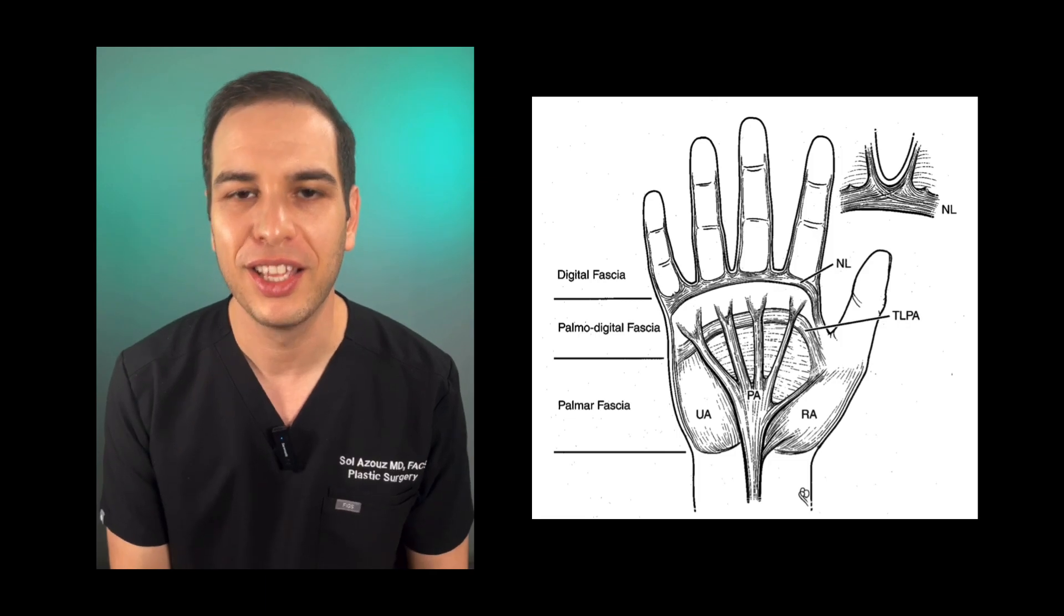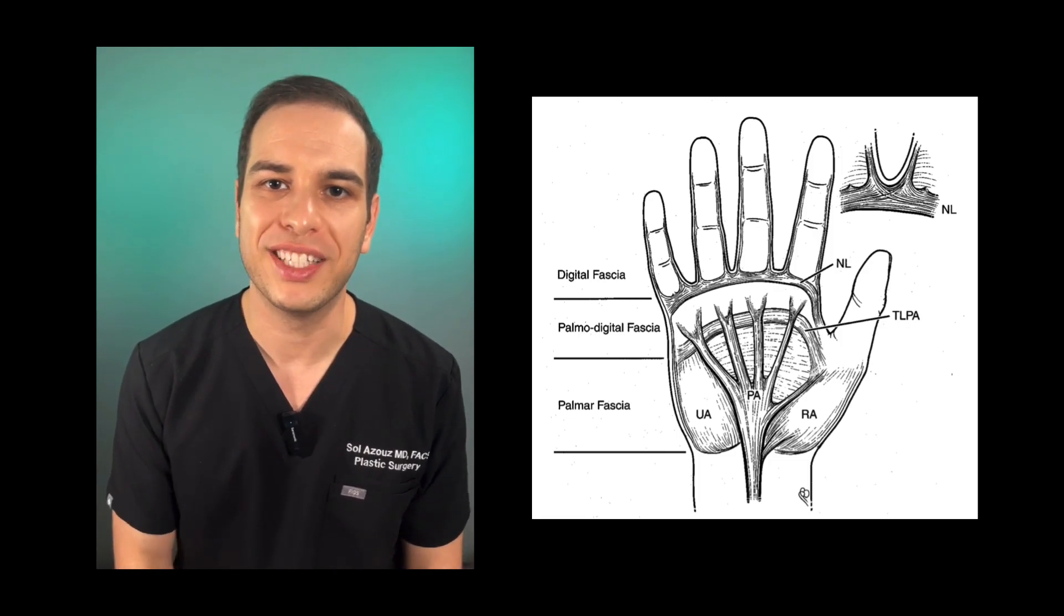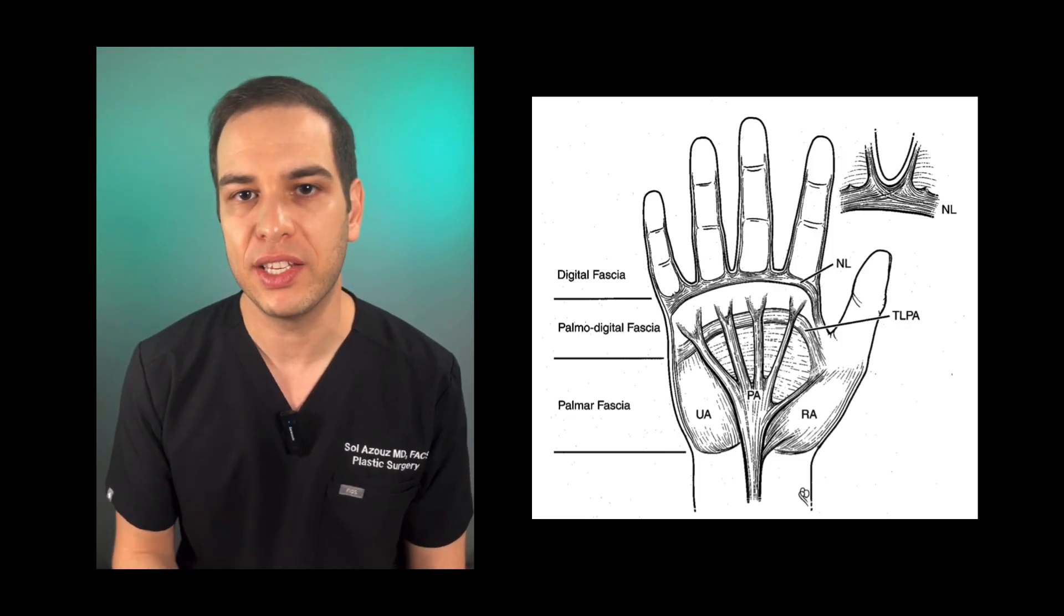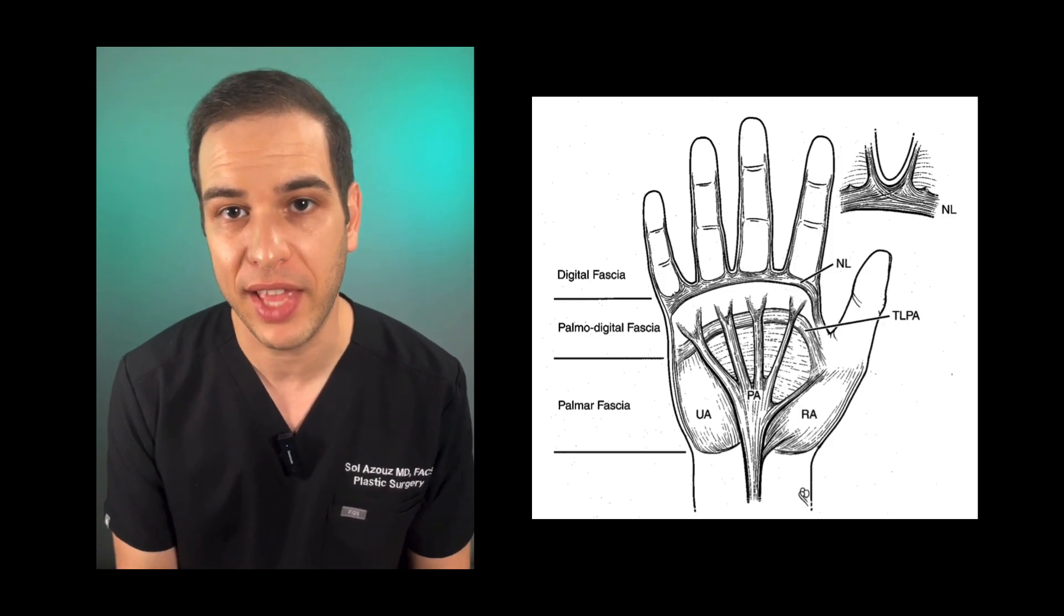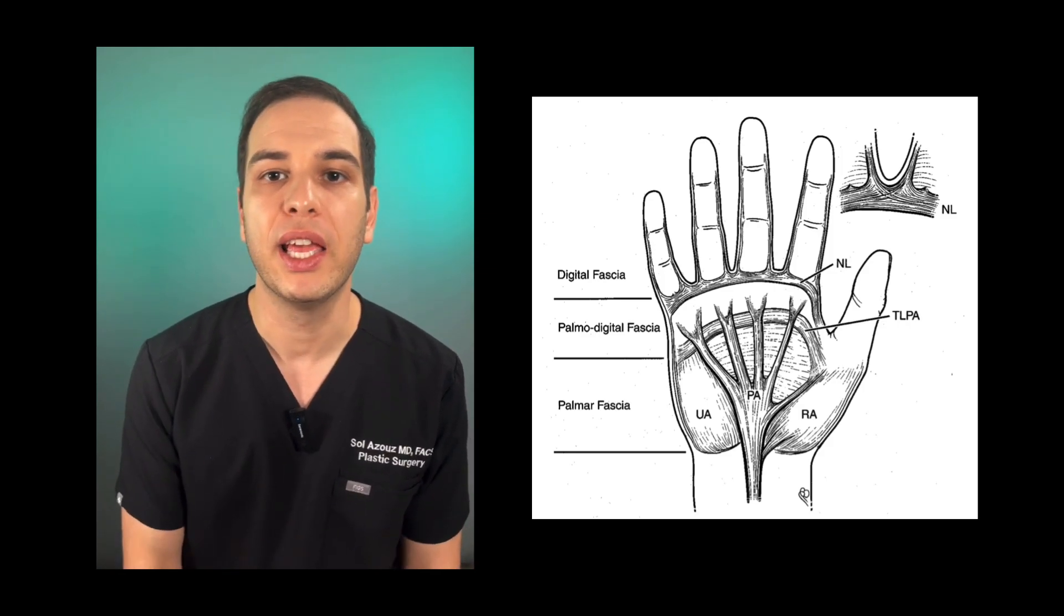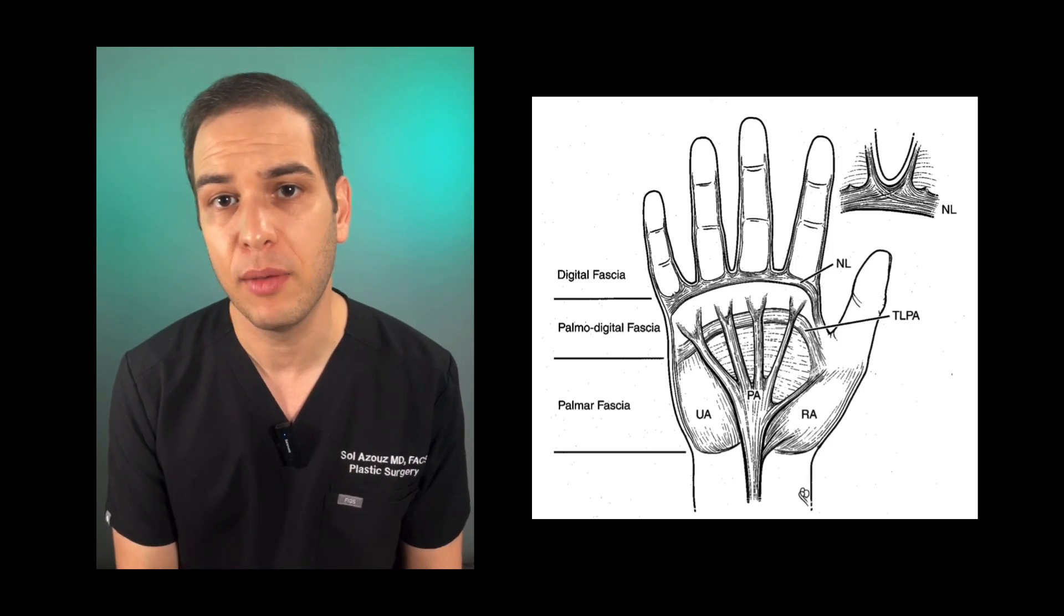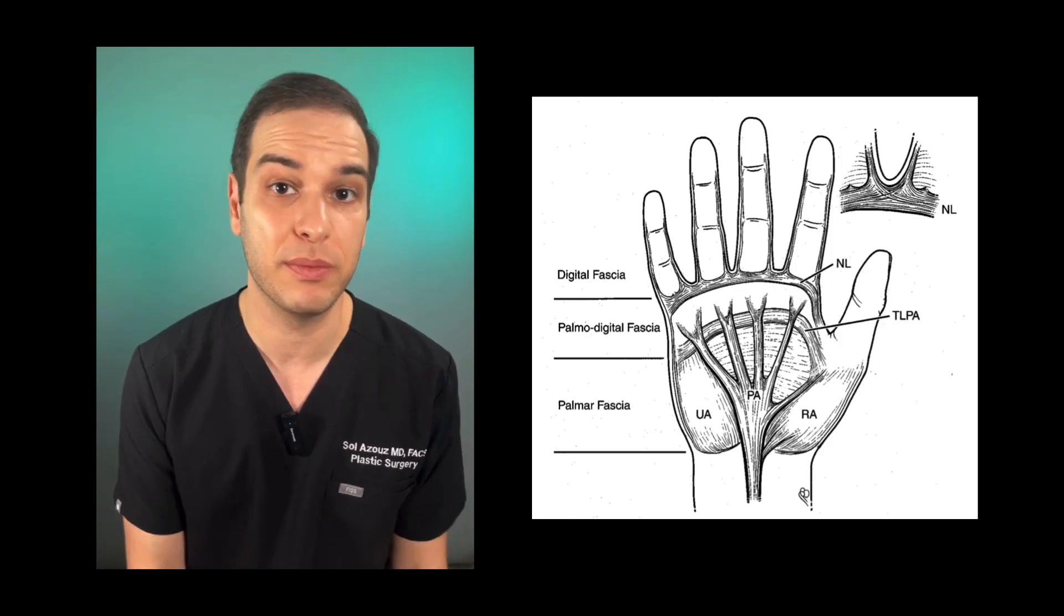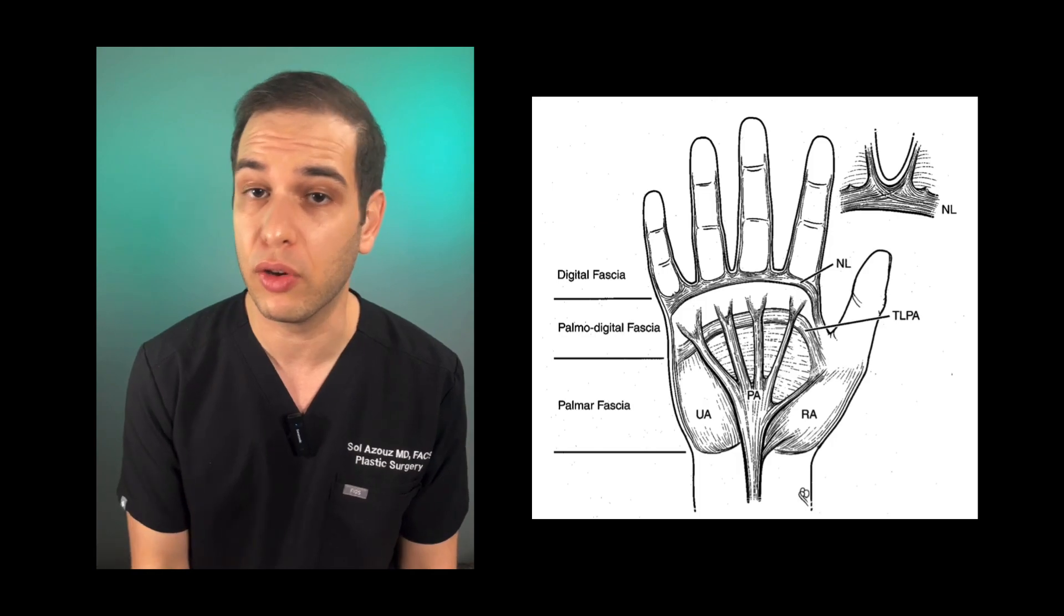Dupuytren's contracture is a flexion contracture that develops on the palm side of the hand, most commonly in patients of Northern European descent, but has been seen in patients from all over the world.